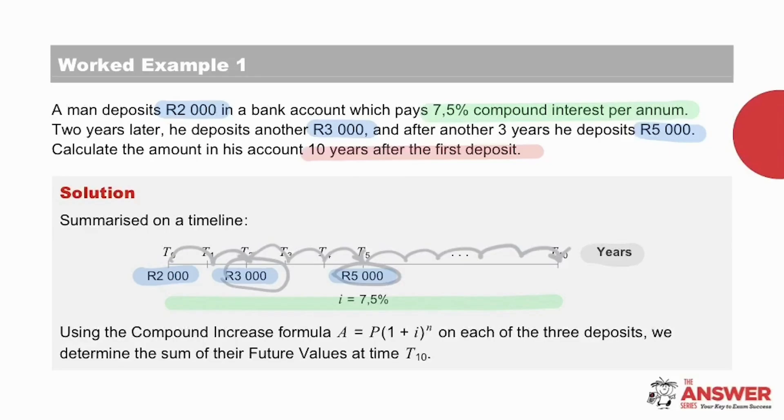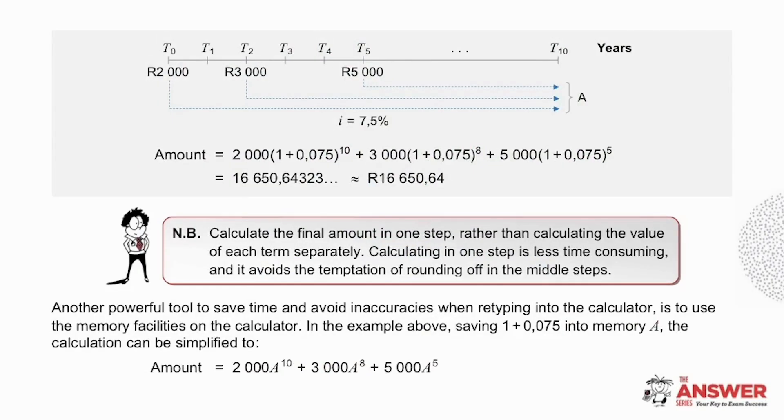Let's rather consider the full journey of each amount separately, using the compound increase formula for each deposit. So instead of calculating each step separately, by considering the journey of each amount, it is possible to do the calculation of the total final investment in one step. So let's have a look at each amount's journey. The R2000 compounded forward ten times. The R3000 compounded forward eight times. And the R5000 compounded forward five times. Together, they give the amount in the man's account after ten years.